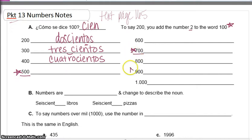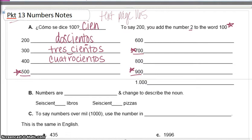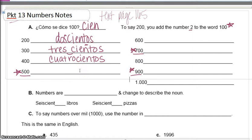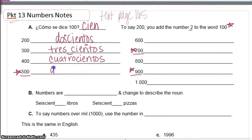Five is going to be different — it's not going to follow the pattern. Seven is going to be different. And nine. So five, seven, and nine are different. They still end in -cientos, but the beginning is different. It's not cinco-cientos — the form changes.